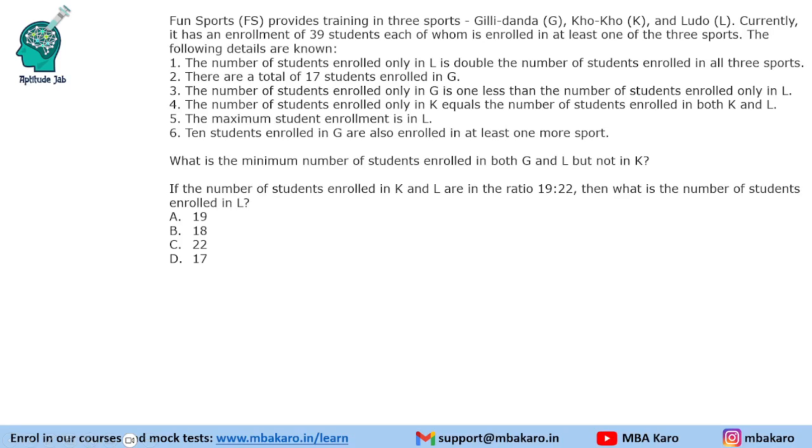Hello everyone, welcome to AptitudeJab. This set from CAT 2018 slot 2 DILR is based on Venn Diagram. It says fun sports provides training in three different sports: Gilly Denda, Cocoa, and Ludo. It has a total enrollment of 39 students, each of whom is enrolled in at least one of the three sports.